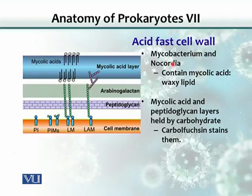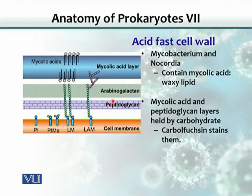Mycobacterium and Nocardia are two different kinds of bacteria that have a special layer called mycolic acid. It is a waxy lipid. This is the cell membrane, there is a peptidoglycan layer, and then there is mycolic acid as the outermost waxy layer. This waxy layer is connected to the peptidoglycan layer through a carbohydrate structure called arabinogalactan.